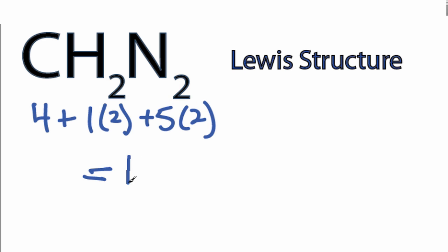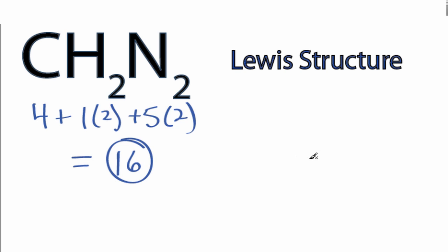for a total of 16 valence electrons for the CH2N2 Lewis structure. Let's draw the Lewis structure pretty much as the formula suggests.